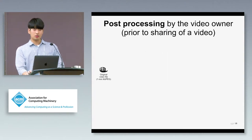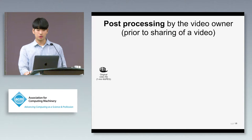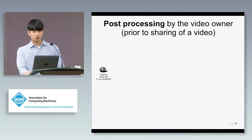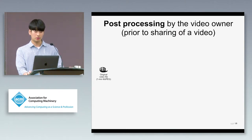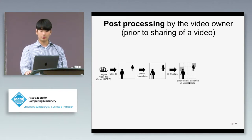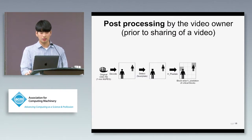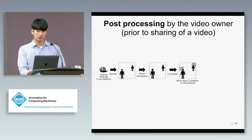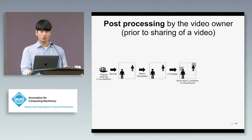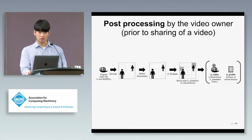Later, when a certain video needs to be shared, the owner post-processes the video for visual privacy protection. In each frame of the video, the blocks that overlap with the detected regions of sensitive objects are HPixelated — we call them critical blocks.